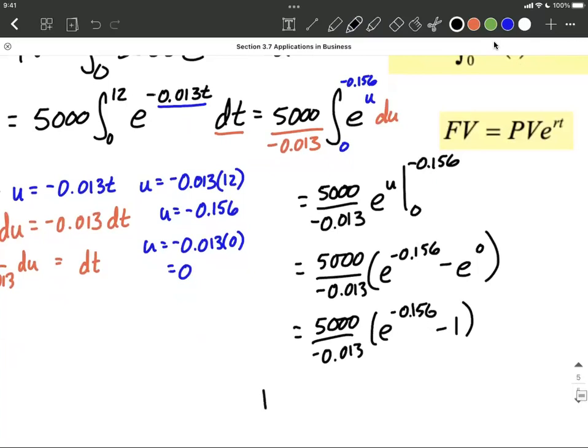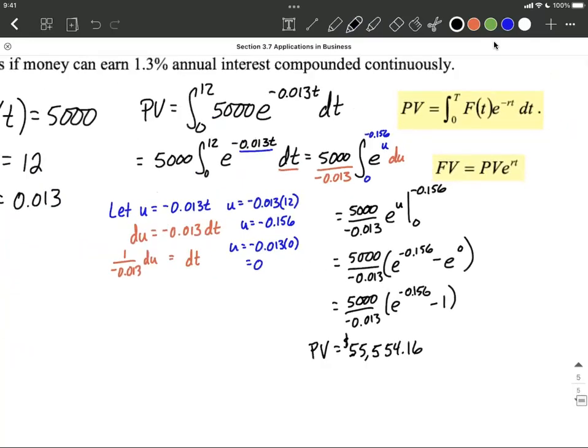Works out to be our present value. What it's worth today is going to be $55,554.16, rounded to the nearest cent. So that's our present value, PV.